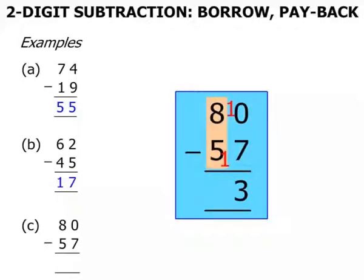And 8 minus, okay, 5 and 1 is 6. 8 minus 6 is 2. So our answer there is 23.